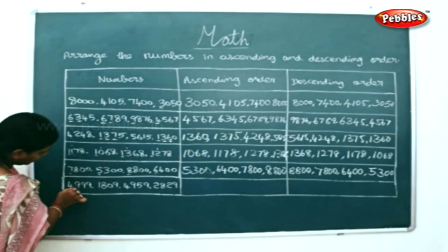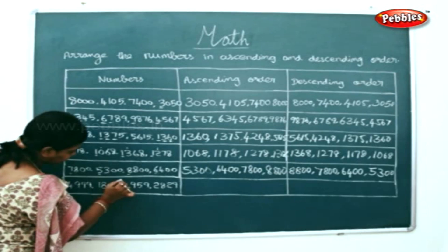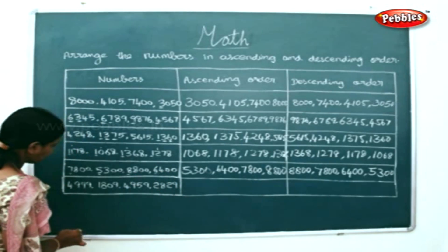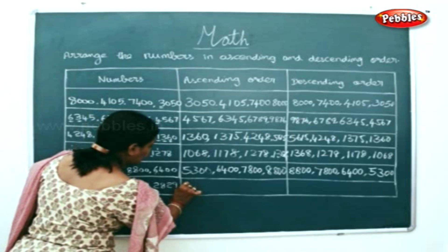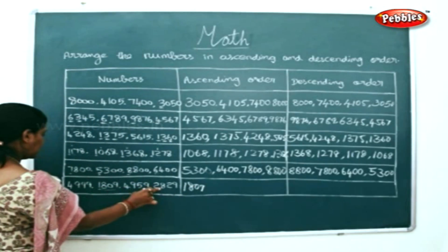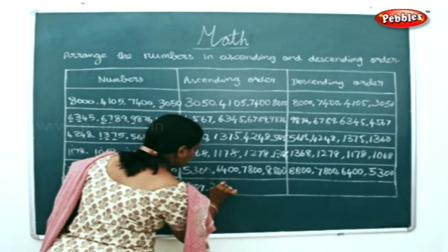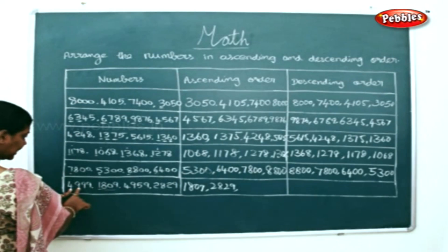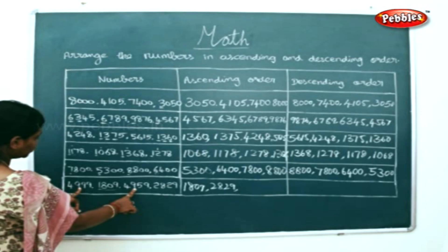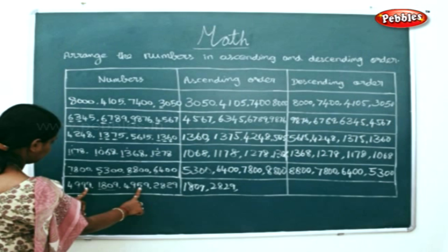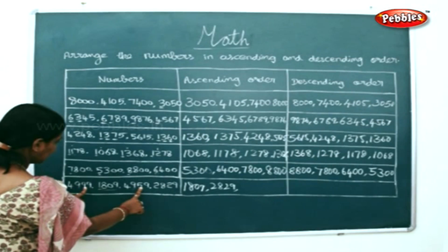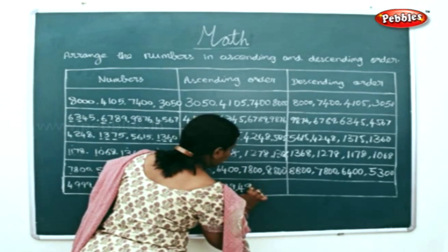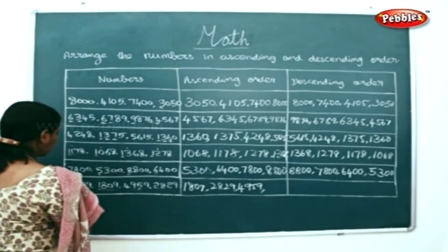Next: 4999, 1809, 4959, 2829. Check the thousands places. This is the least number: 1809. The next will be 2829. Then, here you have 2 fours. So, we will check the hundreds place. In the hundreds place, you have 2 nines here again. So, we will check the tens place. In the tens place, you have 5 here and 9 here. So, 5 is lower than 9 — we will write 4959 first. And the highest number will be 4999.